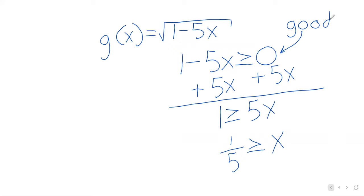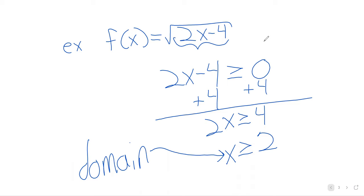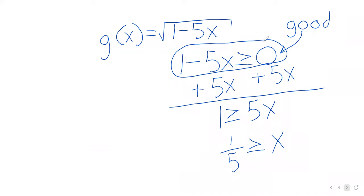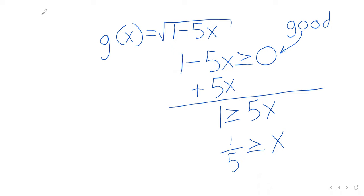Let's ask if anybody has questions about what's come so far — about where that inequality came from, about how we solved it, or anything else. Student question: So you could add the 5x to the 0 even though the 0 didn't have an x? Right. You could think of 0 as 0 plus 0x, and then 5x plus 0x is 5x.